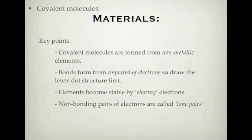Here's a summary of the key points. Covalent molecules are formed from non-metallic elements — those on the right-hand side with more than four electrons in their outer shell. Bonds form from unpaired electrons, so draw the Lewis dot structure first to see where bonds will form. Elements become stable by sharing electrons. Non-bonding pairs of electrons are called lone pairs. That's the end of Part 1 on covalent molecules. If you have a question please let me know, and stay tuned for Part 2.